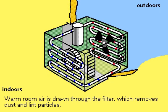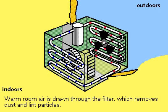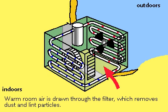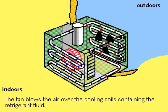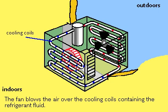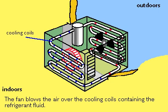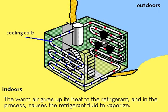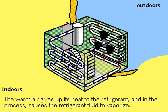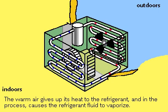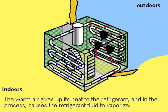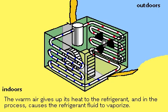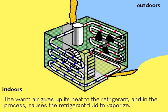Warm room air is drawn through a dust filter by a fan, then blown over the cooling coils, which circulate the refrigerant in its liquid state. As the room air flows by the coils, it causes the liquid in the coils to evaporate, and in the process heat is absorbed by the refrigerant as it turns to gas. The cooled air is blown back into the room.